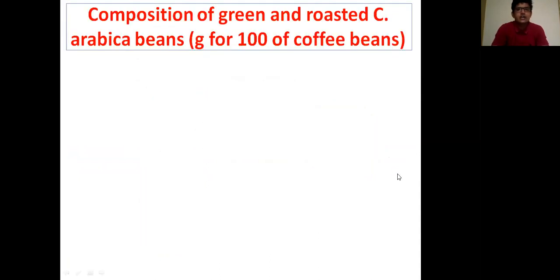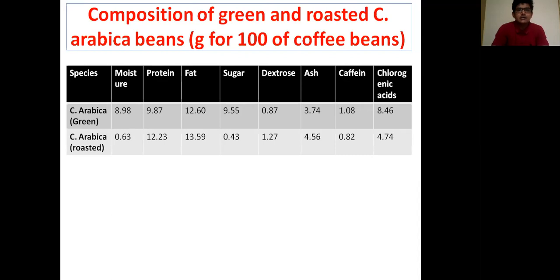Here we are going to see the composition of green and roasted C. arabica beans, per 100 grams of coffee beans. This table shows the various constituents present in green and roasted arabica species. The different constituents present in coffee beans are moisture, protein, fat, sugar, dextrose, ash, caffeine, and chlorogenic acid.